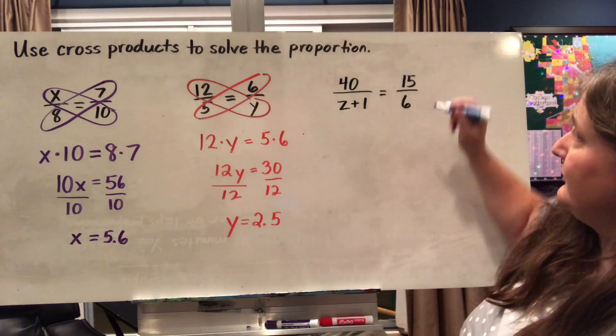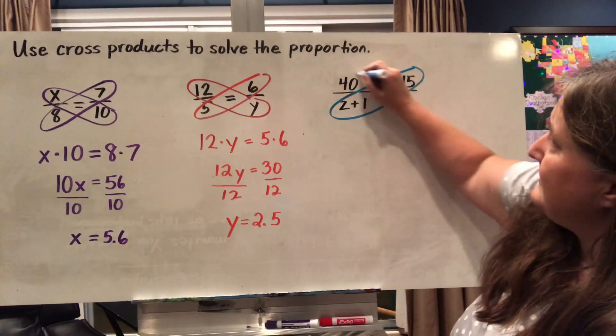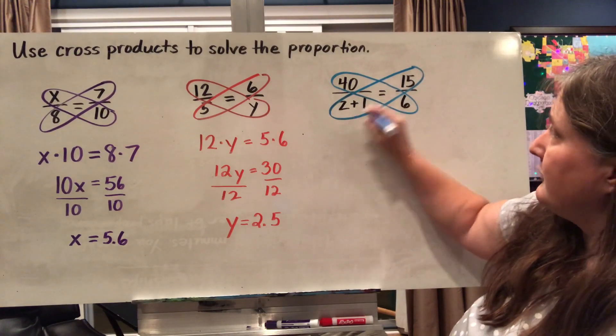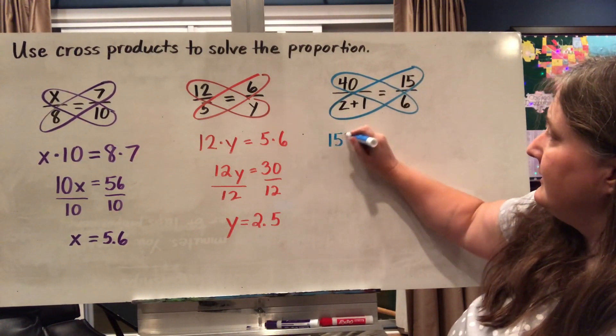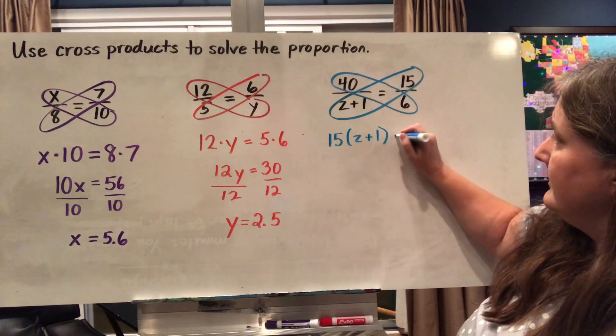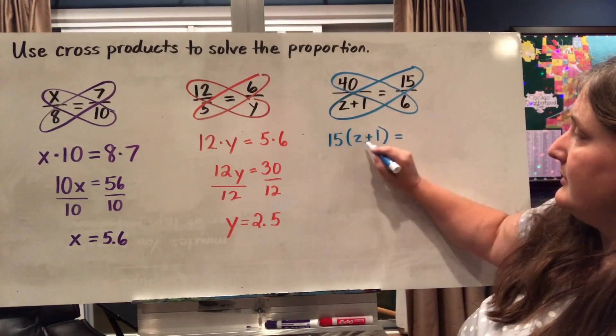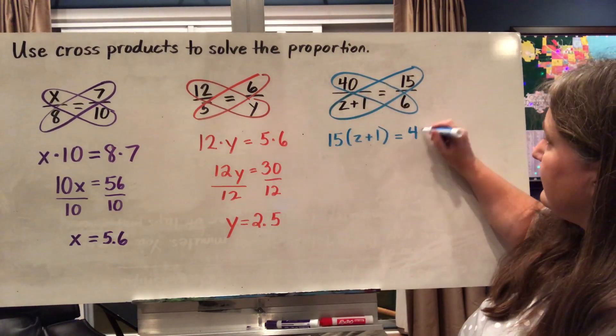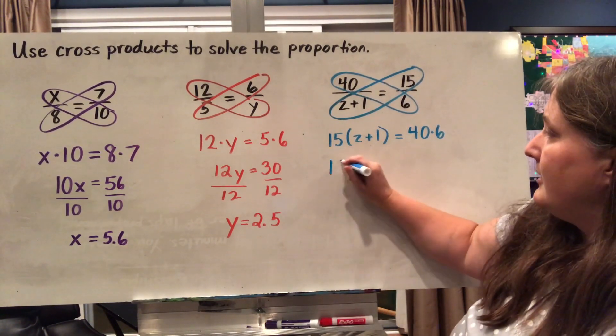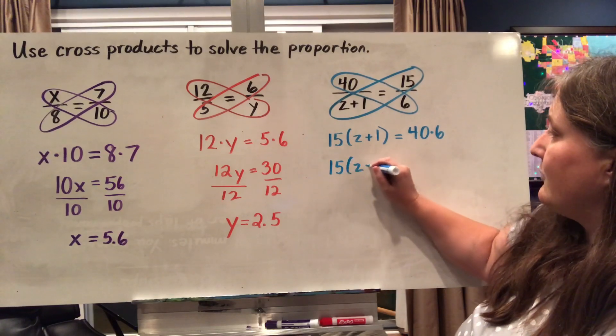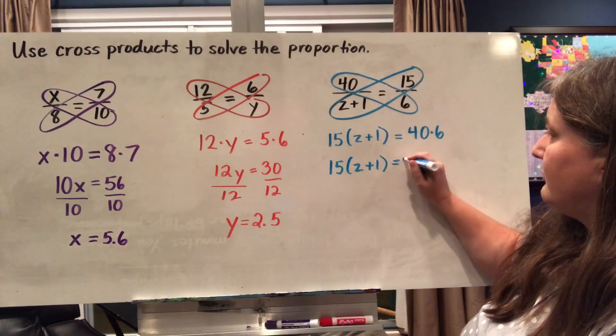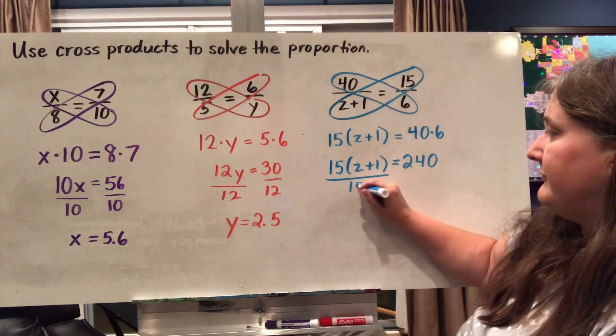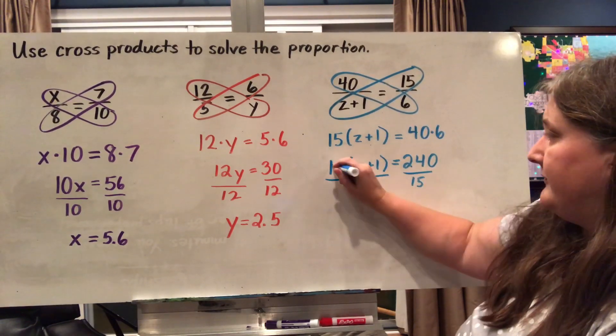All right, this one's a little more complicated because I've got z plus 1 here. So my one cross product here is 15 times (z plus 1). Z plus 1, I put in parentheses here. And I got 40 times 6. So 40 times 6 gives me a total of 240.